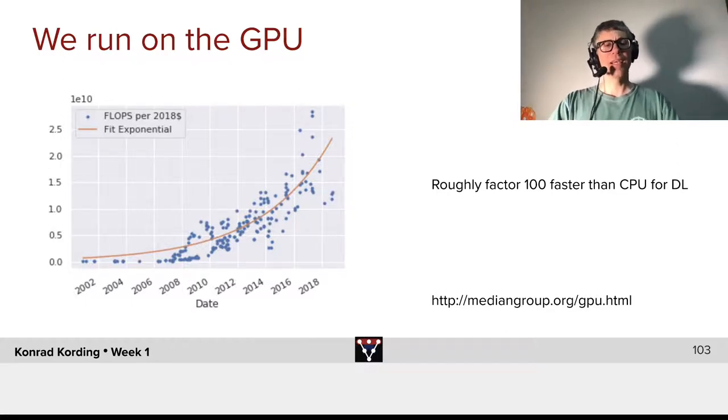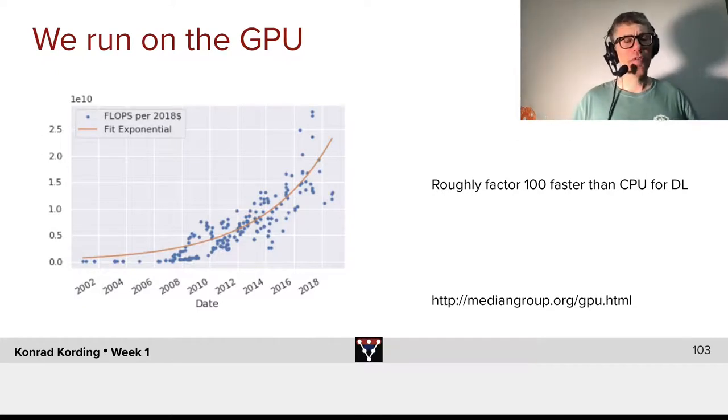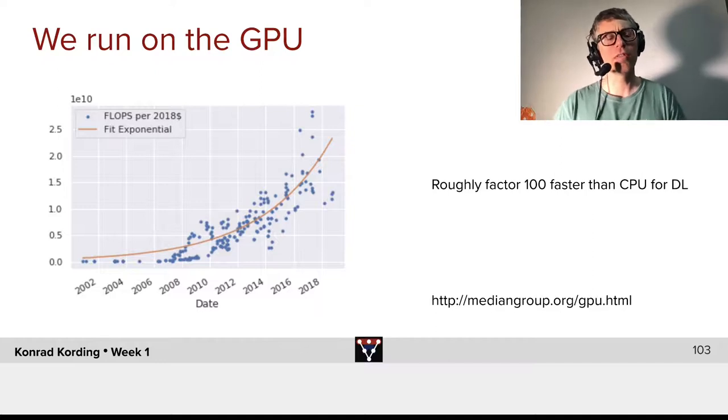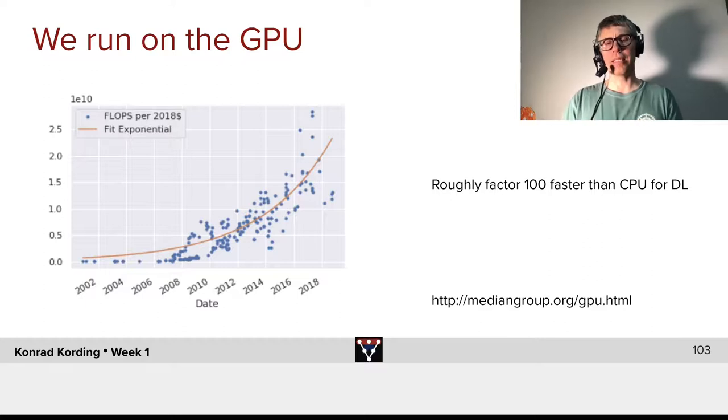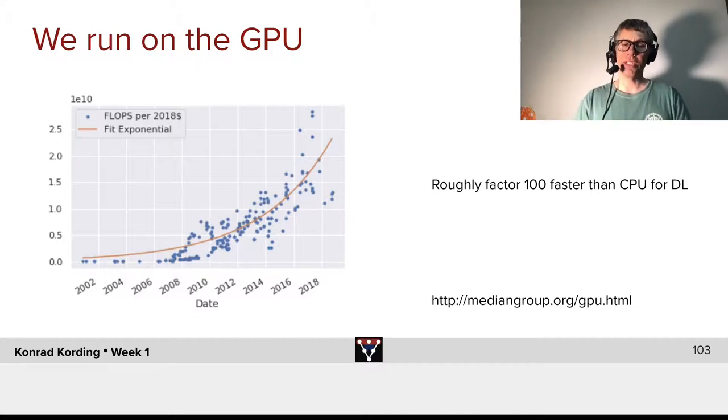So, what we have here is floating-point operations per $2,018. Basically, how much compute on a GPU does our money buy? And we can see that it has gotten much, much more efficient over the last 20 years or so. It really came a long way.